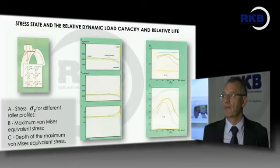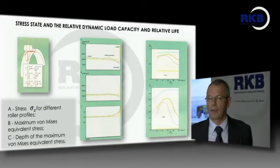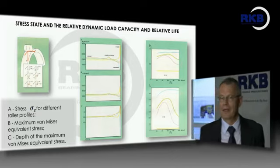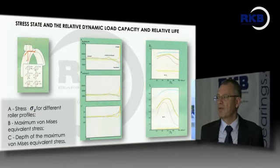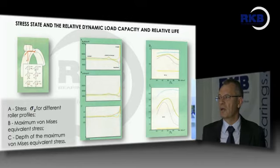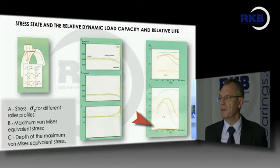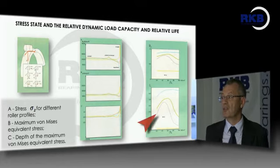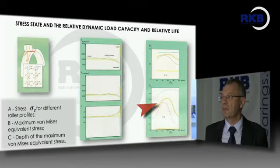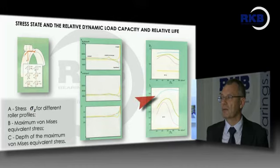Regarding the evolution of rating life: very poor rating life is obtained with a straight profile, while large rating life can be obtained with the ZB profile and especially with the logarithmic profile.